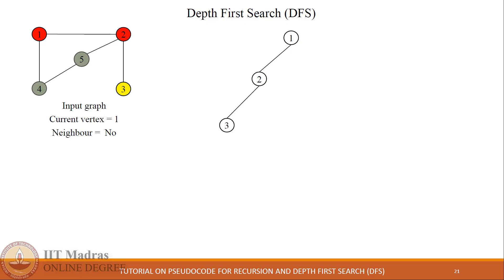Vertex 3 does not have any neighbor other than 2, but 2 is already a visited node, so we cannot go further. Therefore we backtrack to the previous node, which is 2. Vertex 2 now has only one unvisited neighbor, which is 5, so 5 is added to the depth-first search tree.